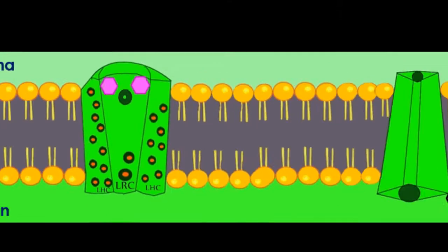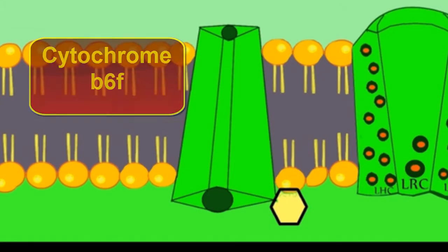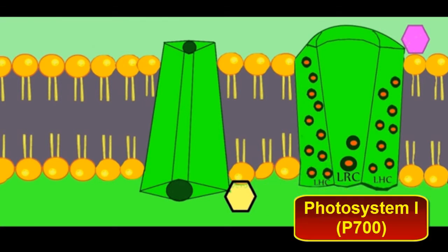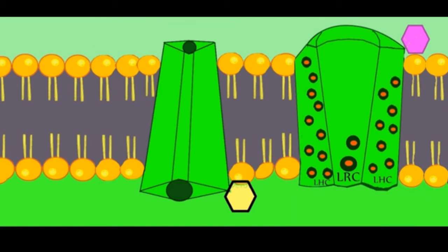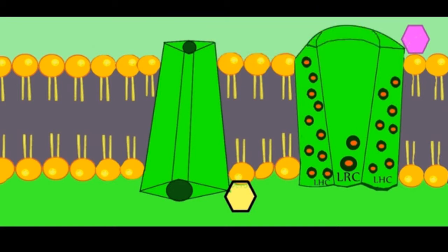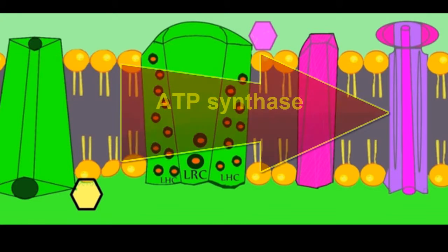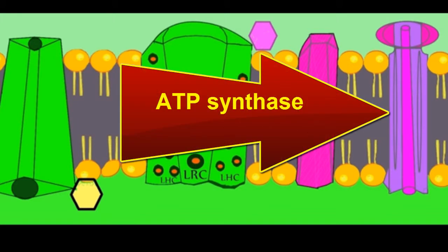Next, we have cytochrome B6F complex, the mobile carrier plastocyanin, photosystem I complex, which also has a light-harvesting complex as well as a light reaction center with a pair of P700 chlorophyll molecules. We then have the mobile carrier ferredoxin, ferredoxin NADP+ reductase or FNR, and finally we have ATP synthase.